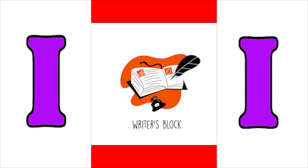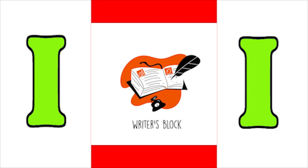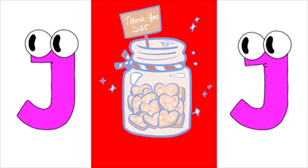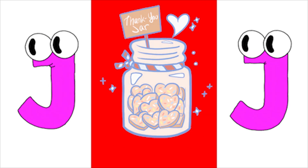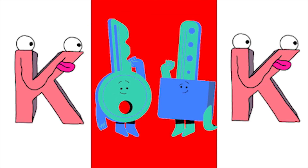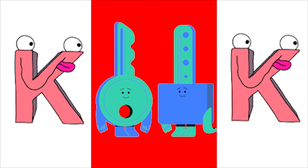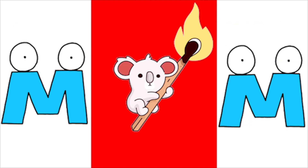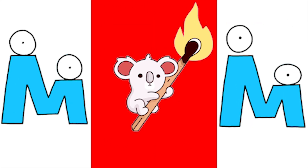I for inkpot, J for jar, K for keet, L for leaf, M for magic.